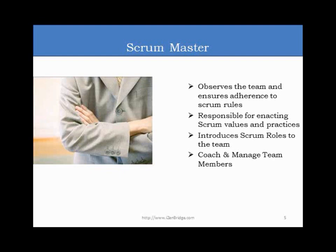Once they pass the Ha stage, they become masters of Agile values and principles and may create their own rules. Instead of a Daily Scrum, they may have something else that achieves the collaboration and coordination objective for the team. That is called the Ri stage, where the team starts making their own rules.